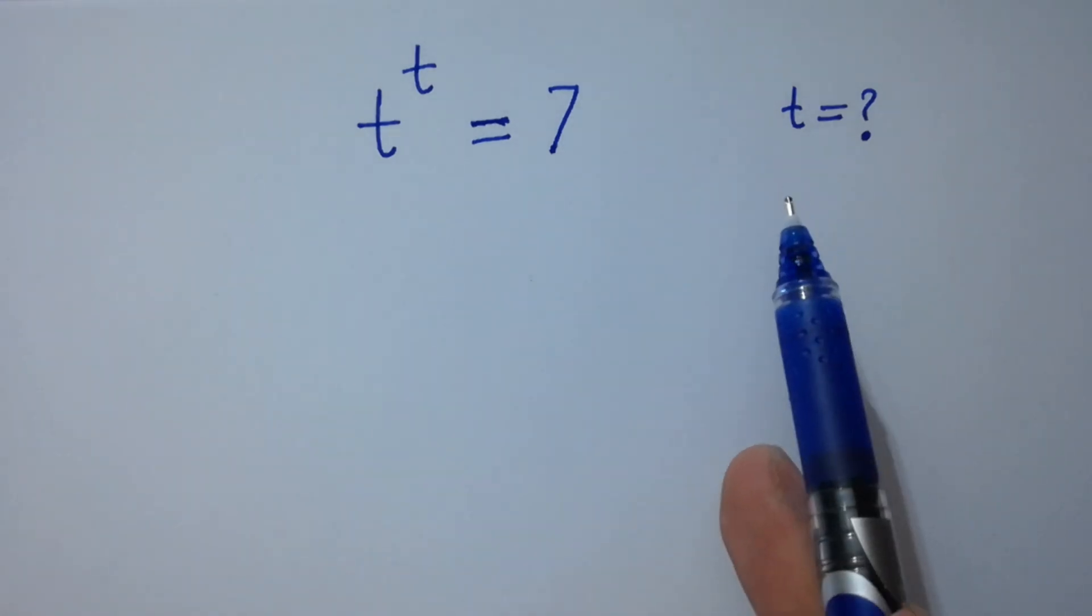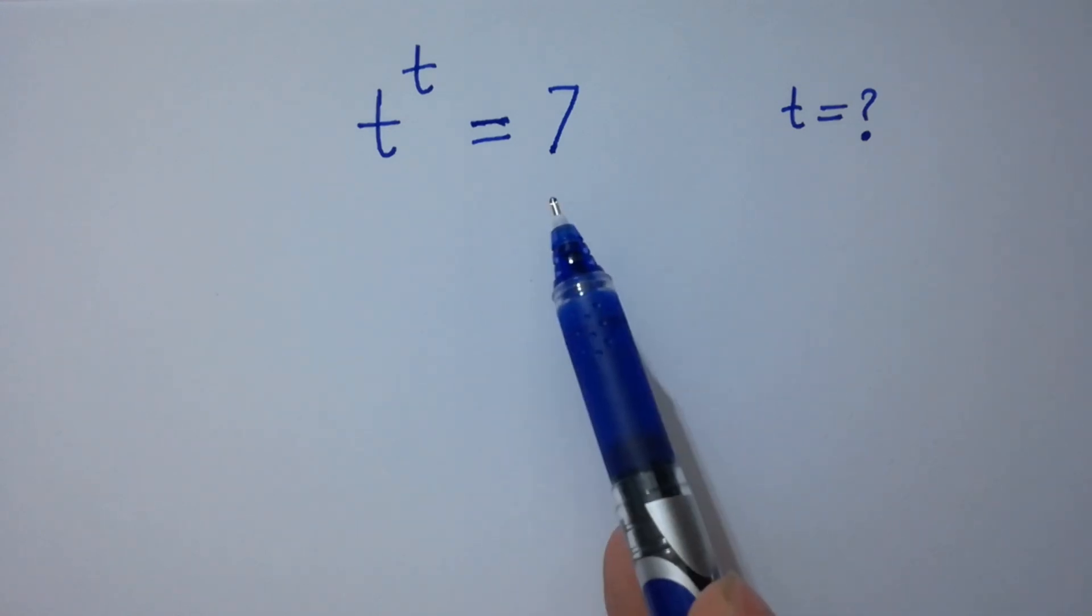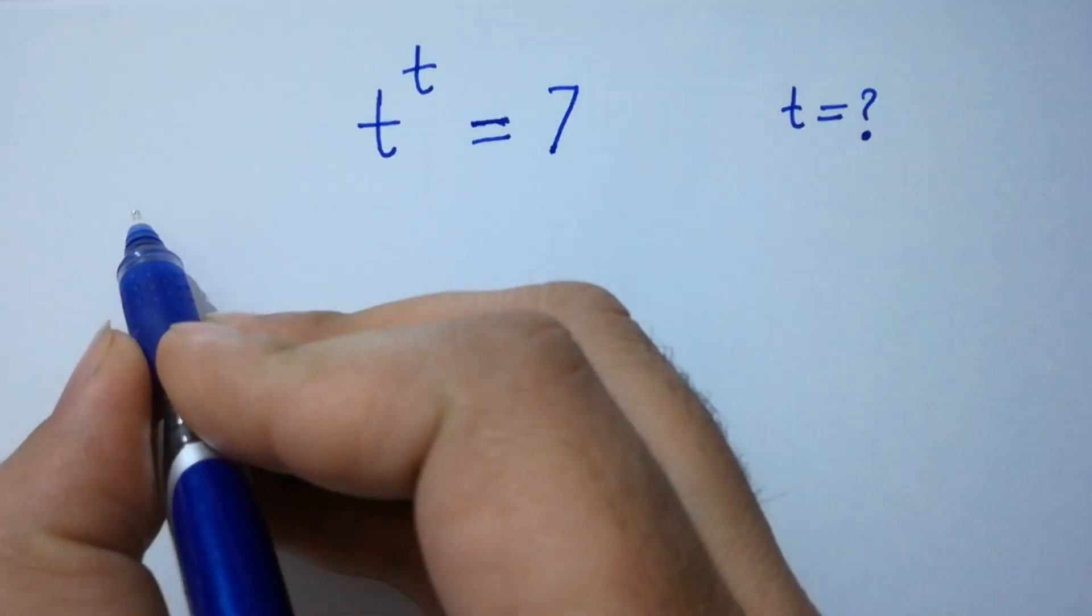Hello friends, find the value of t if t to the power t equals 7. Let's have a solution.